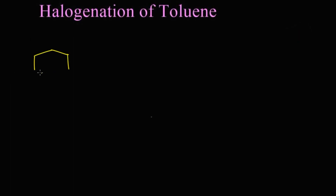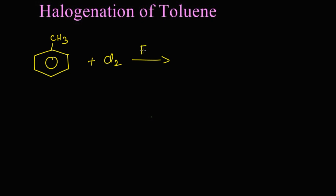We are going to chlorinate toluene in the presence of a Lewis acid such as iron or iron(III) chloride. Chlorine in the presence of iron or iron(III) chloride in a dark atmosphere — let's see what happens.